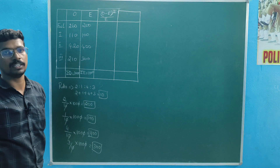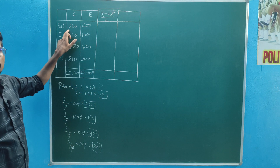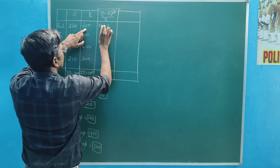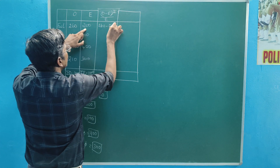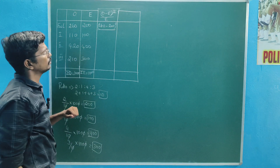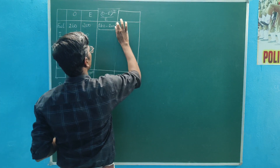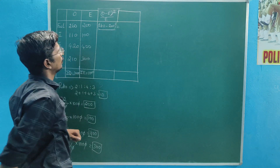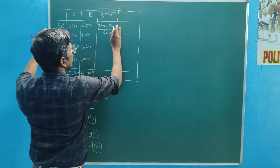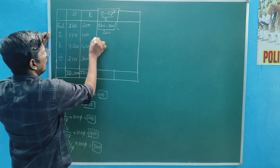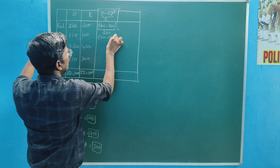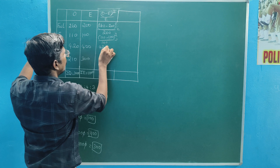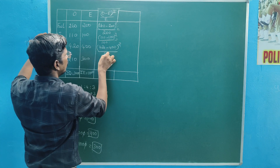O minus E whole square divided by E. O minus E: minus 260 minus 200. 4 squared divided by — divided by — I will get the same. Red developer equal to, divided by 20. 210 minus 100 whole square divided by 100, equal to 420 minus 400 whole square divided by 400.